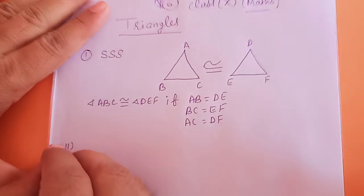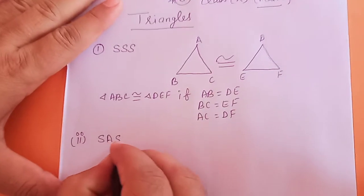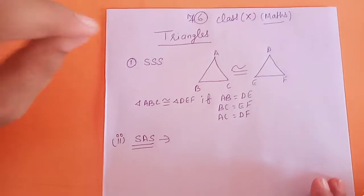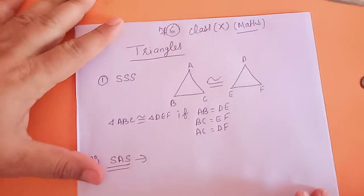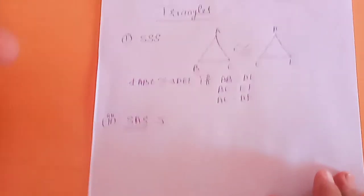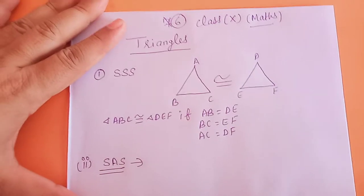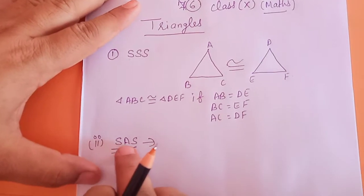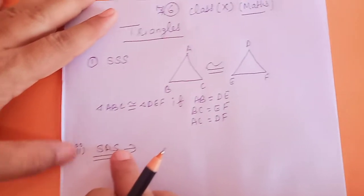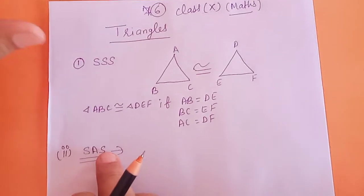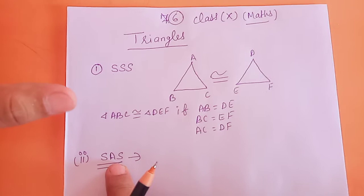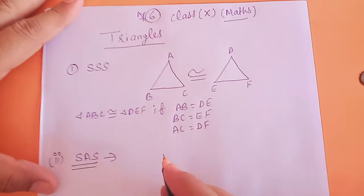The second one is SAS — side, angle, side congruence rule. Congruence meaning same as it is, there is no difference. This method says side, angle, side, meaning two sides and the included angle between them.